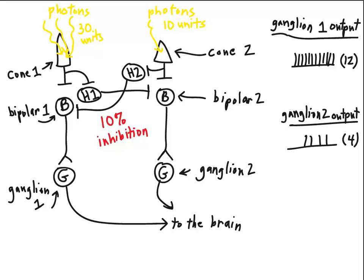Now we're going to assume, because of the ease of the mathematics, that each horizontal cell produces 10% inhibition. So if there are 30 units of disinhibition here on horizontal cell number 1, then it'll take 10% of this disinhibition and apply it over here as inhibition.